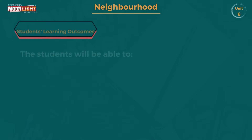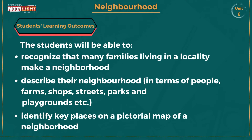First of all I will discuss student learning outcomes. After completing this chapter the student will be able to: number one, recognize that many families living in a locality make a neighborhood; number two, describe their neighborhood in terms of people, farms, shops, streets, parks and playground; number three, identify key places on a pictorial map of a neighborhood.